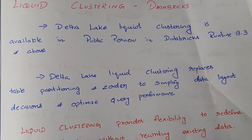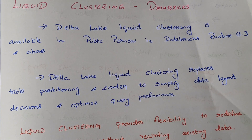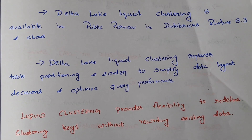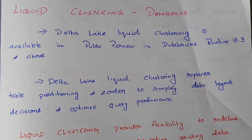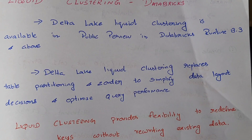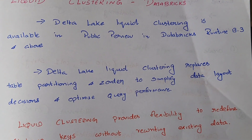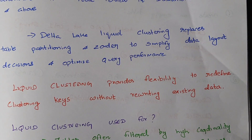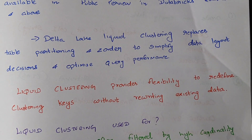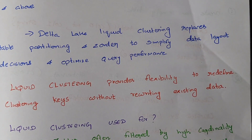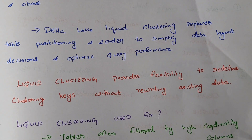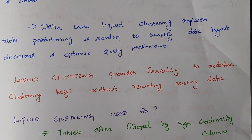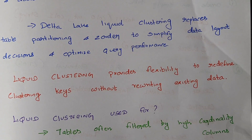Delta Lake liquid clustering is available in public preview from runtime version 13.3 and above. It replaces traditional table partitioning and Z-order by, simplifying data layout decisions and optimizing query performance. Liquid clustering provides the flexibility to redefine clustering keys without rewriting existing data, which is a great advantage — you no longer need to recreate or rewrite the table with a new partitioning key.